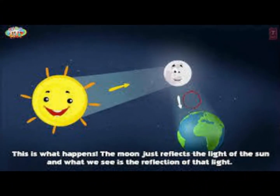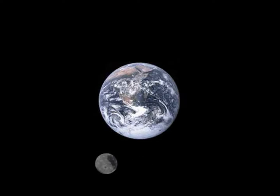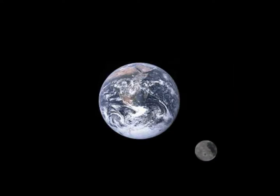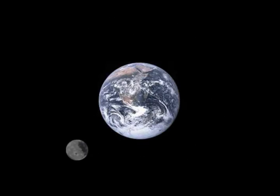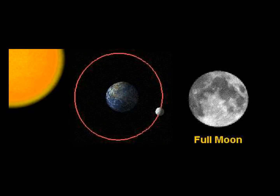We can see the moon at night because of the reflection of the sun's rays that bounce back to the Earth. The moon orbits or rotates around the Earth, and it takes 28 days for the moon to complete one revolution.